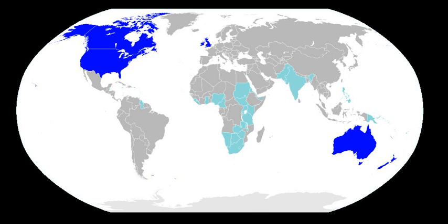The countries in which English is spoken can be grouped into different categories by how English is used in each country. The 'inner circle' countries with many native speakers of English share an international standard of written English and jointly influence speech norms around the world. English does not belong to just one country, and it does not belong solely to descendants of English settlers. It has also become by far the most important language of international communication when people who share no native language meet anywhere in the world.